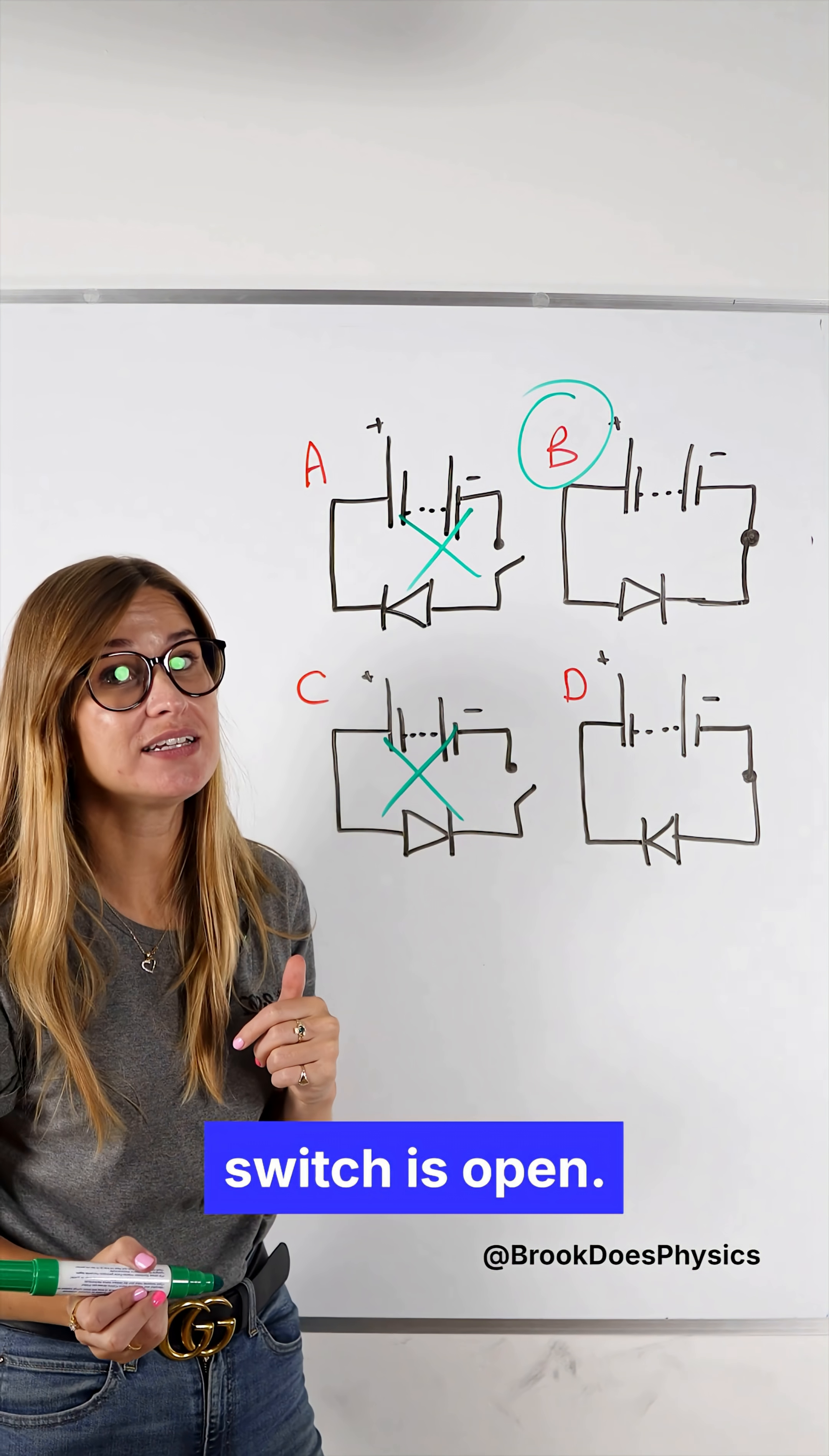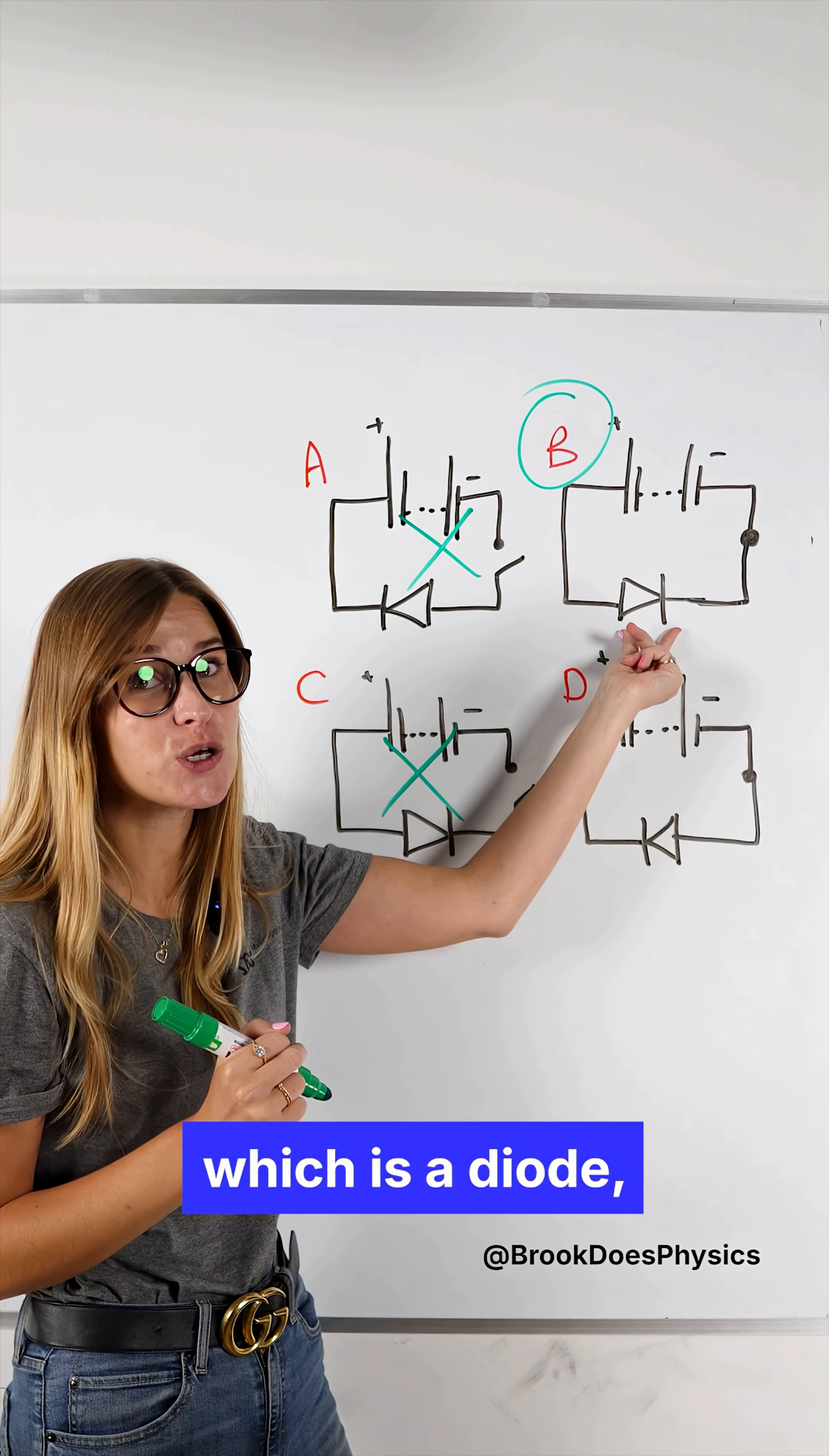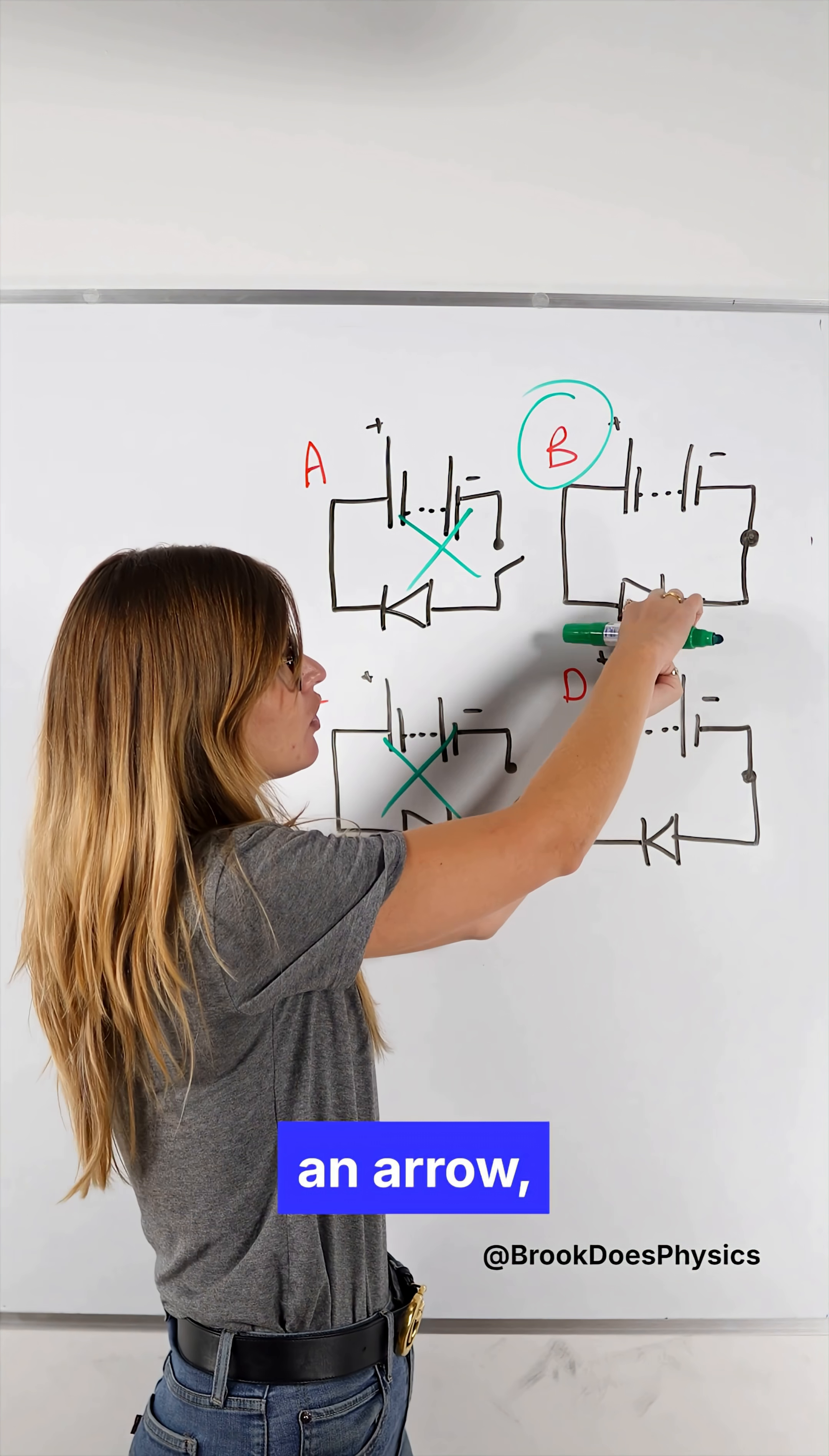And number two is because this component which is a diode is the correct way around and a diode only lets current flow in one direction and it kind of looks like an arrow.